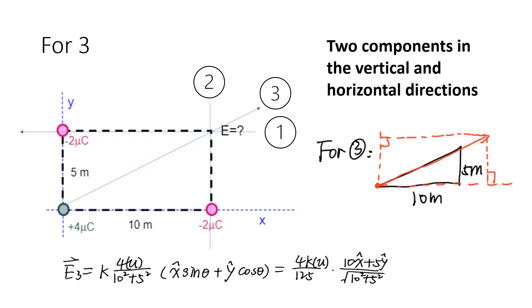Cosine angle one is given by 5 over square root of 5 squared plus 10 squared. We can get E3 equals K times 4µC over (10 squared plus 5 squared) times (10x hat plus 5y hat) over square root of (10 squared plus 5 squared).